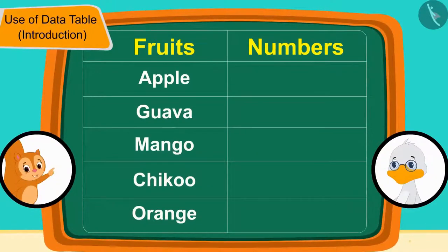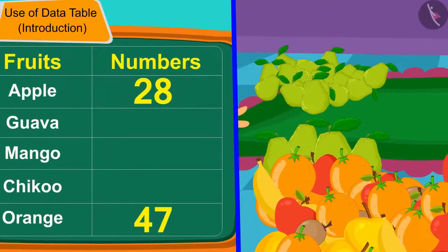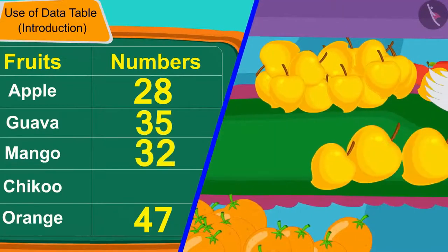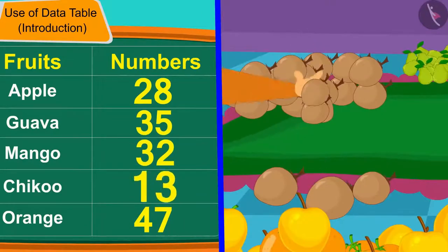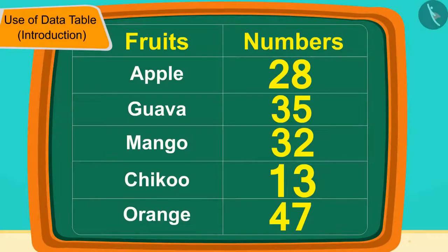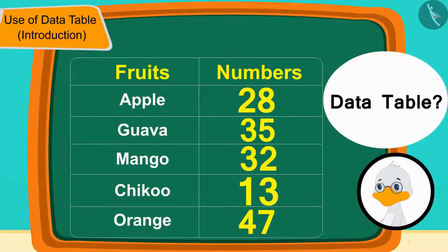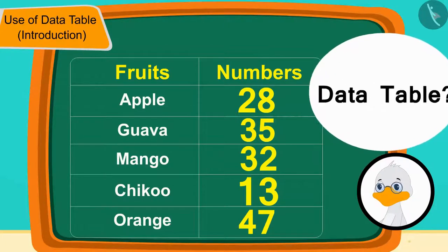Uncle immediately said 47, and Chanda wrote this number in front of orange in the table. Uncle and Chanda once again counted all the fruits and wrote their numbers in the table. Children, have you seen such a data table? If we want to find the numbers of many objects and draw some kind of conclusions, we can use the data table.